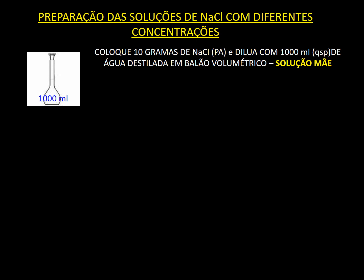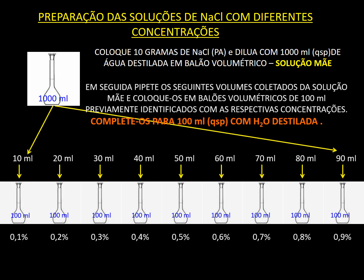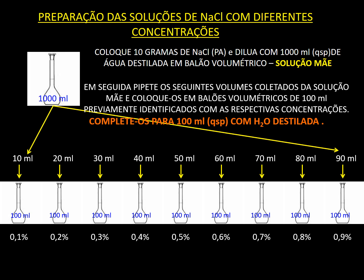A partir daí, fazemos a distribuição das diferentes concentrações de cloreto de sódio. Da solução mãe, retira-se 10 ml para fazer a solução de 0,1%, 20 ml para a solução de 0,2%, e assim por diante até completar a de 0,9%. Todas essas diluições têm que ser feitas em balões volumétricos de 100 ml. Você pode ter apenas um balão, fazendo gradualmente, lavando e repetindo o processo.